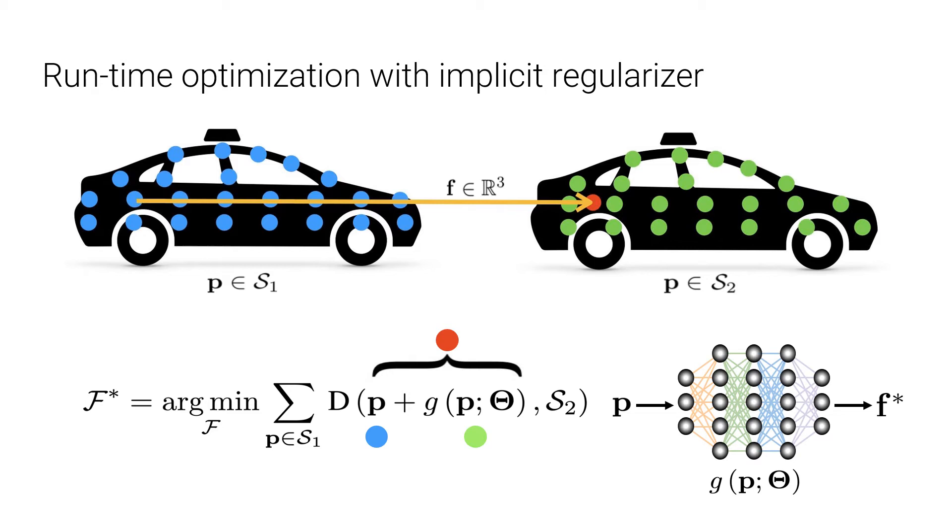Therefore, the optimization becomes minimizing the point distance D to find the optimal network parameters theta. The neural prior in our method acts as a strong implicit regularizer that constrains highly dynamic motion fields to be as smooth as possible.